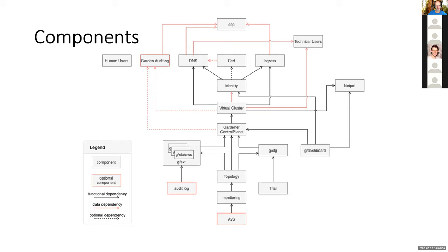We also plan to get rid of the one host cluster we currently need, but this will take more time. The plan is for autonomous clusters that are fully managed by Gardener or the machine controller manager. But this is not part of the Landscaper — it's another work stream running in parallel.